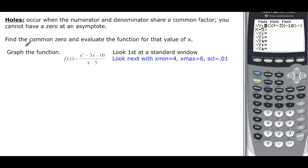So if we want to find the common zero and evaluate it, we would have f(x) equal to, if I factor this, it would be x minus 5 and x plus 2, and on the bottom we have x minus 5, and you can see that there's a common factor and that would be the zero. The common zero would be x minus 5 equals 0, or x equals 5.